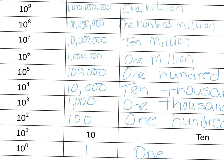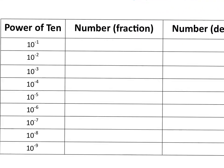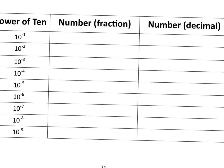If you've never noticed that before, hopefully you notice it now. Now we're going to take this and go into the chart at the bottom, which covers the negative exponents, and we're going to write them as fractions and as decimals. For 10 to the negative 1, we know that's going to be 1 over 10, which is 0.1. For 10 to the negative 2, we know that's 1 over 100, which is 0.01. And for 10 to the negative 3rd, that's 1 over 1,000, which is 0.001.